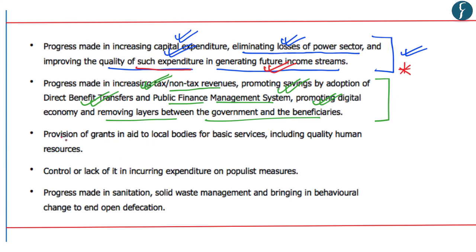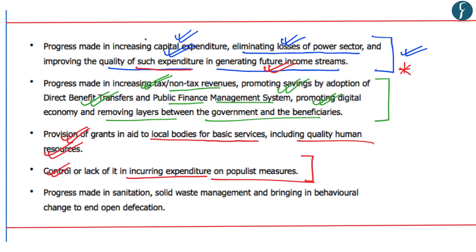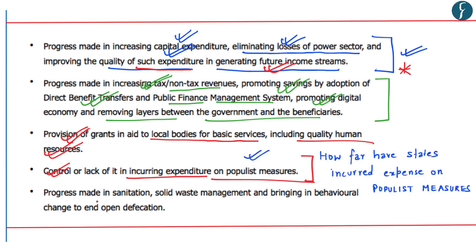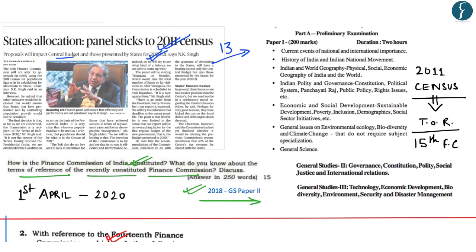The 15th Finance Commission shall also look into provision of grants-in-aid to local bodies for basic services including quality human resources, the controlling or lack of incurring expenditure on populist measures, and progress made in sanitation, solid waste management and behavioural change to end open defecation. The 15th Finance Commission shall recommend fiscal policies for five years commencing from 1st April 2020. This news is important both from prelims and mains examination perspectives.